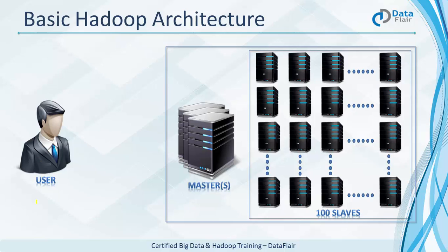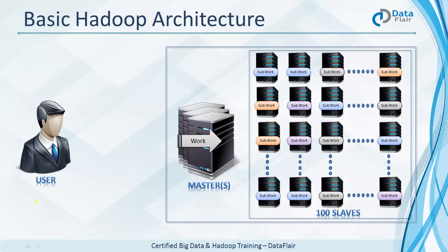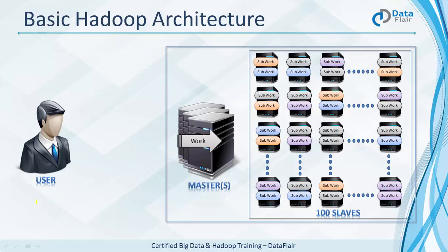Here's exactly how it works: when a user wants to process data, they develop the algorithm and submit it to the master. The master divides this work into sub-tasks and distributes them to all the slaves. All the slaves — say a hundred of them — work on the same job simultaneously. In this manner, Hadoop processes data distributedly.